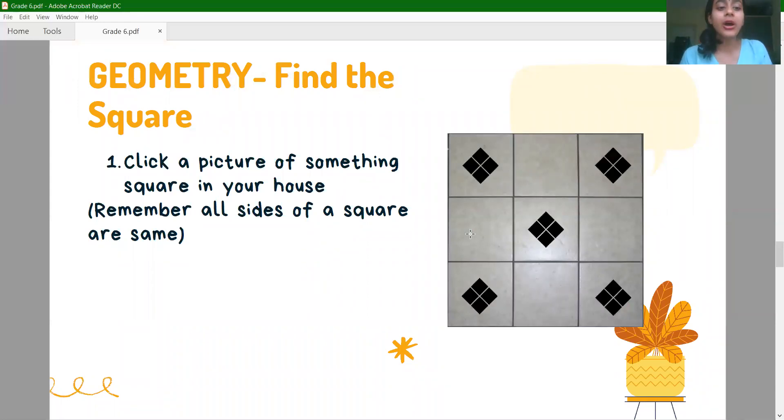Then, for geometry, you have to find a square. Okay? In your house, wherever you get any square thing. Whether it is a tile, or a box, or a table. But remember, it has to be a square.